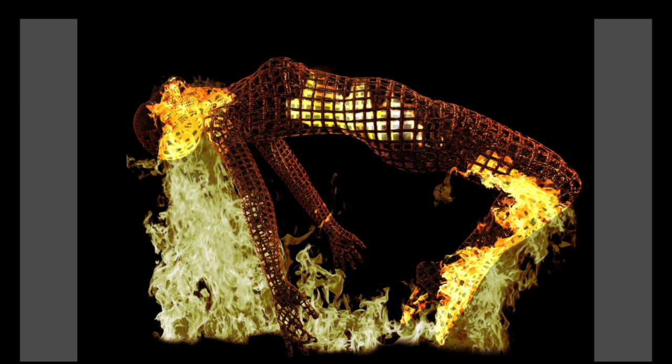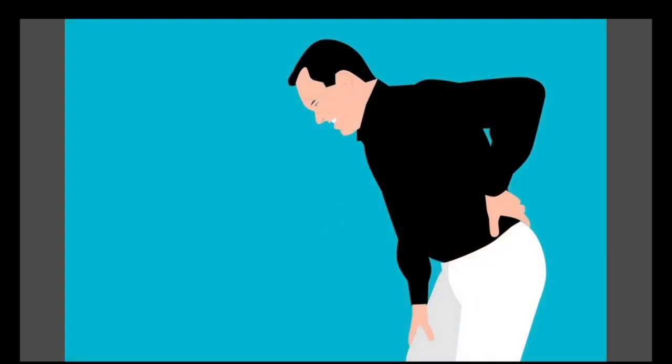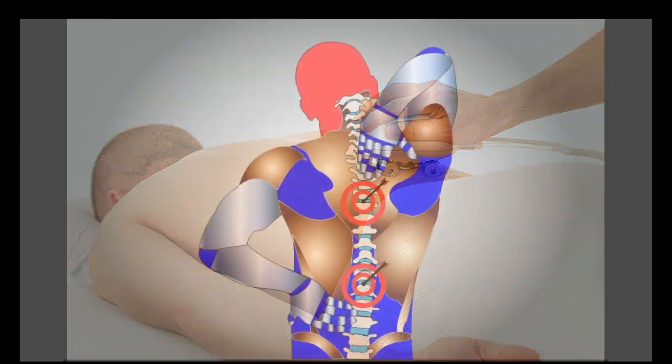A slipped disc can result from a sudden injury or develop over time due to wear and tear. Symptoms may include tingling down one leg, pain on one side of the body, and worsening back pain when walking.